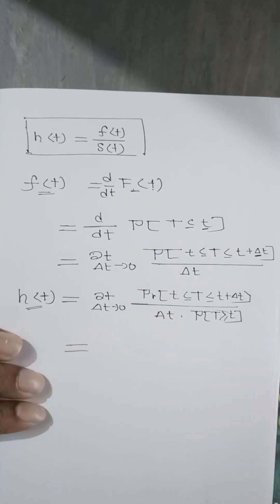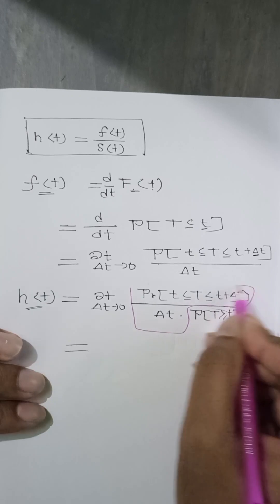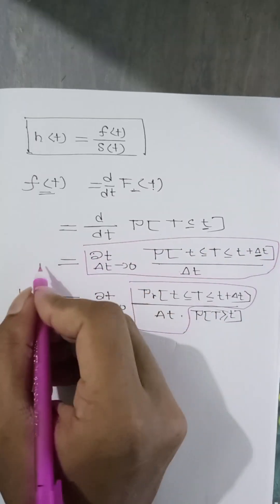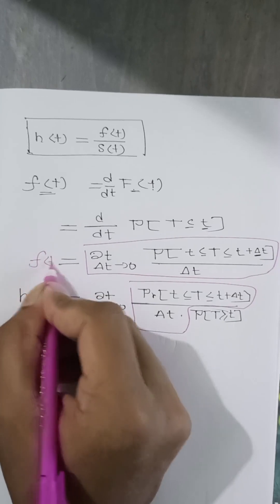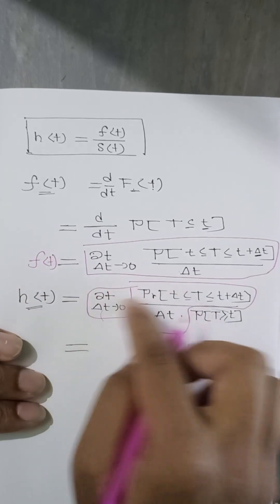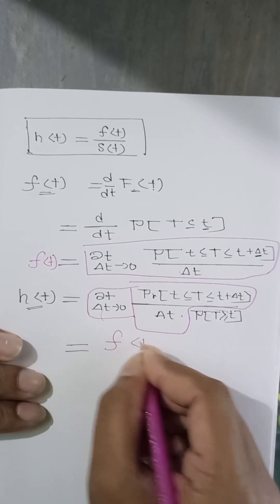As you notice, this short part is nothing but f of t. So we can write this whole part as f of t.